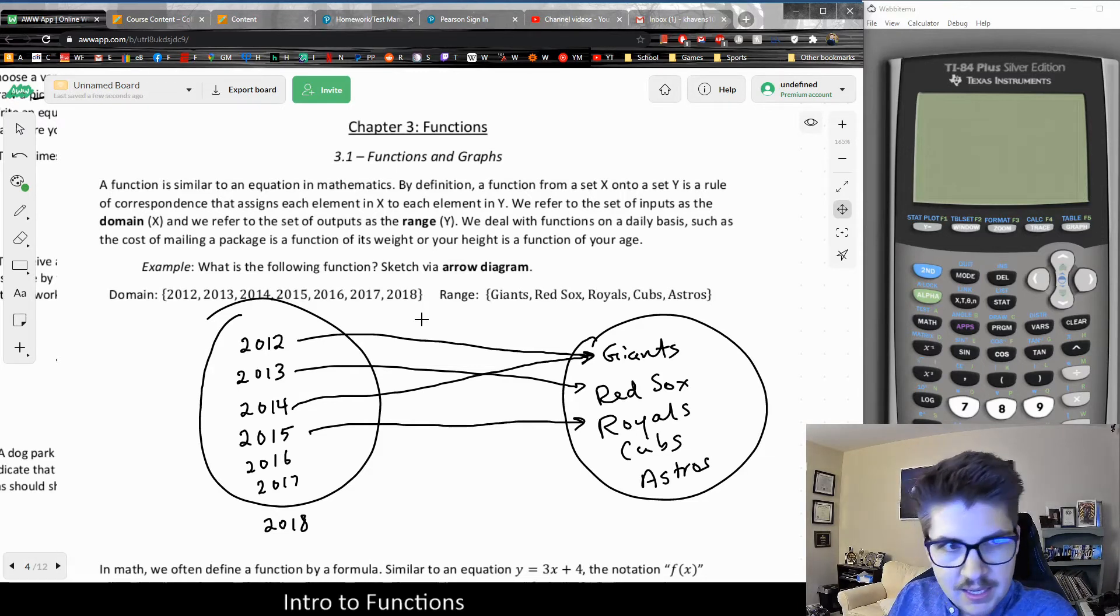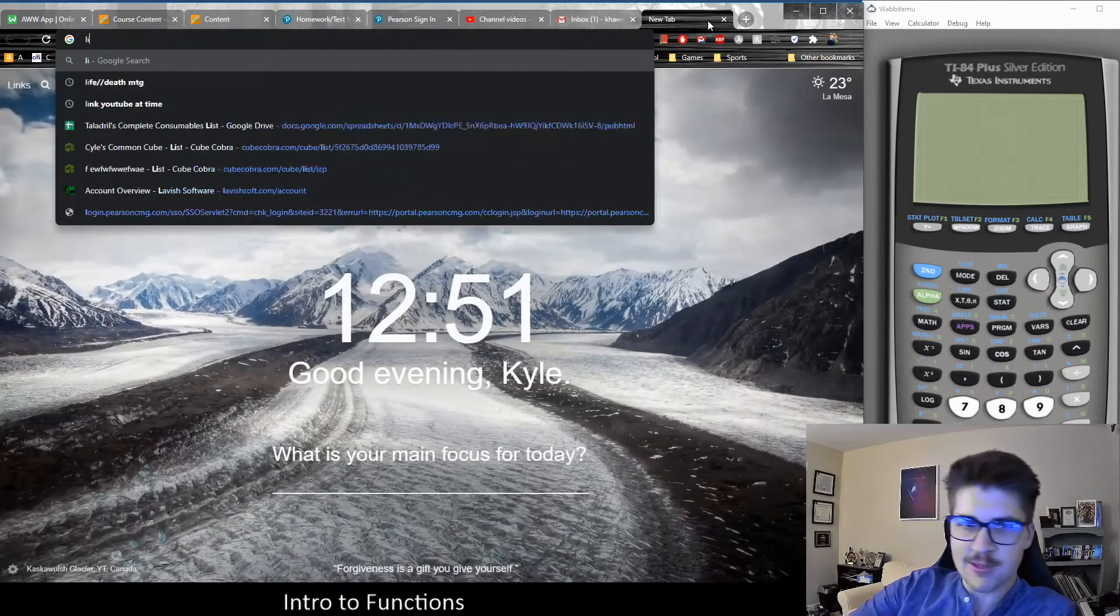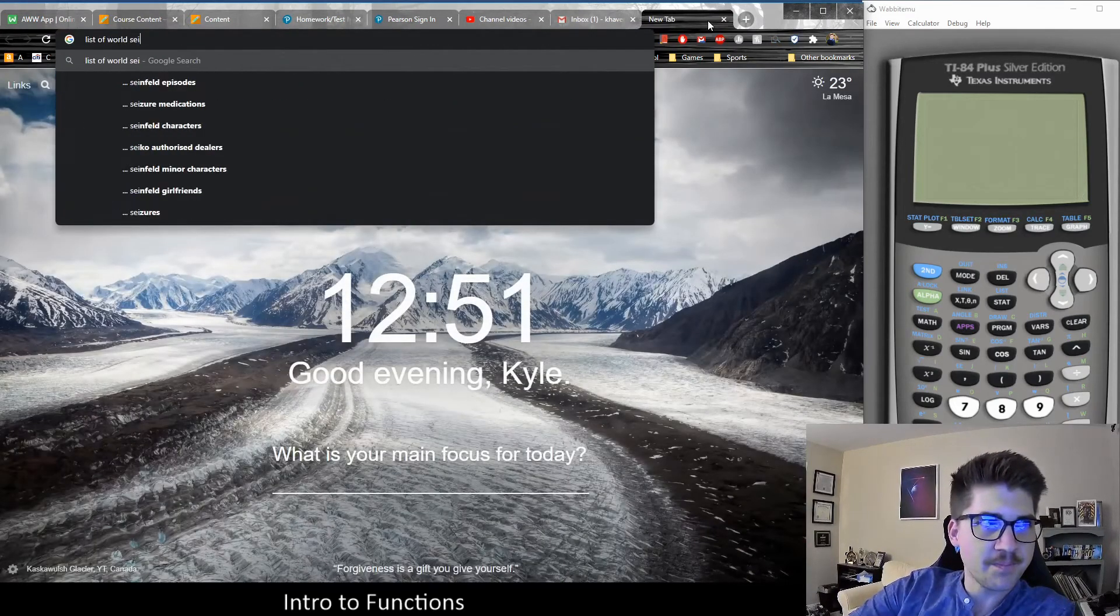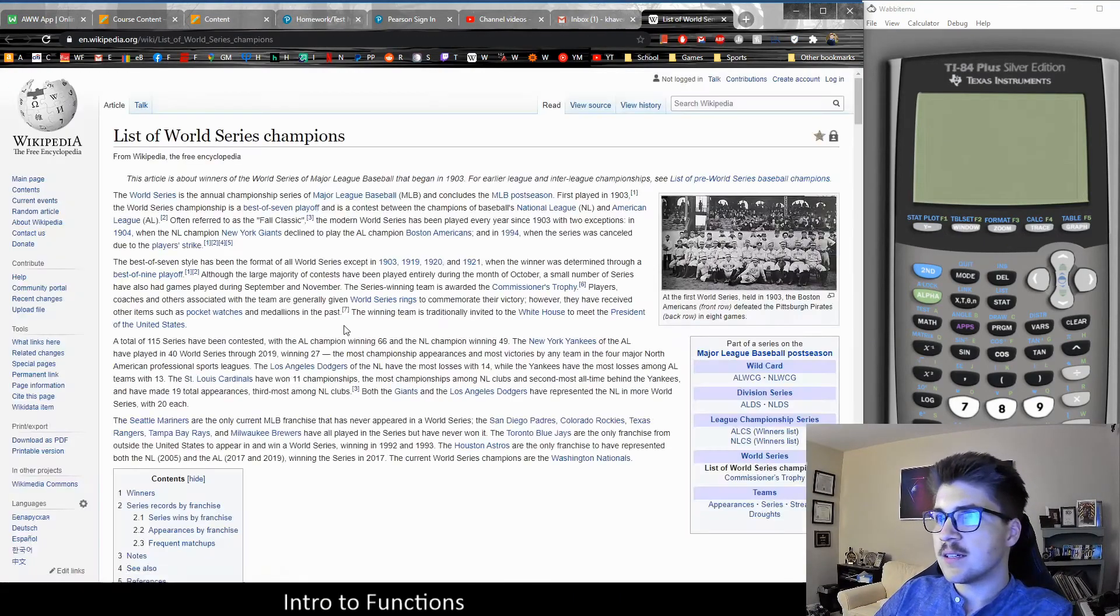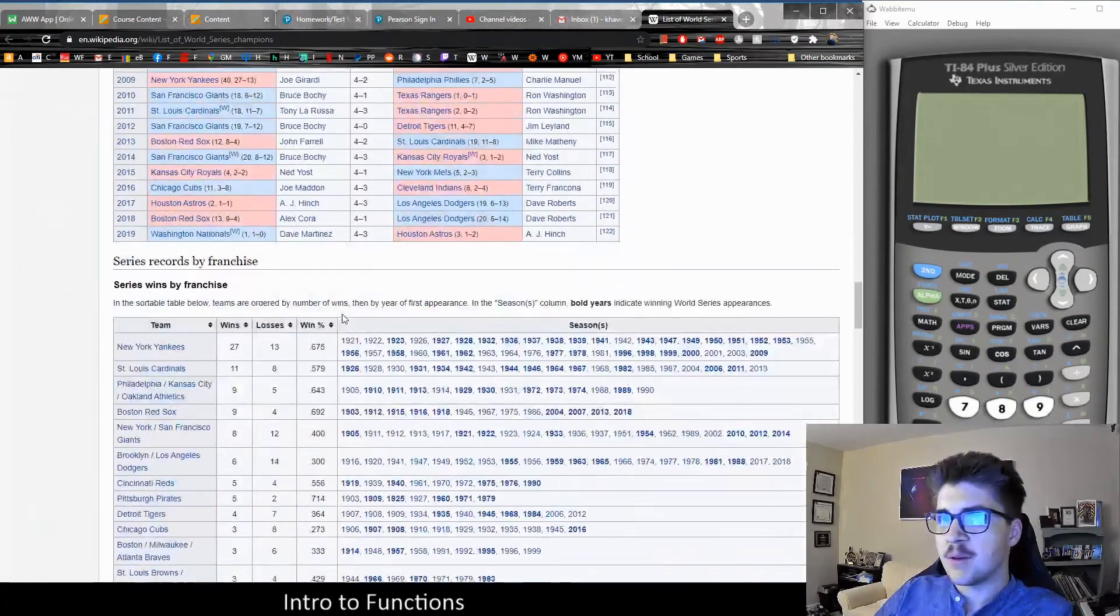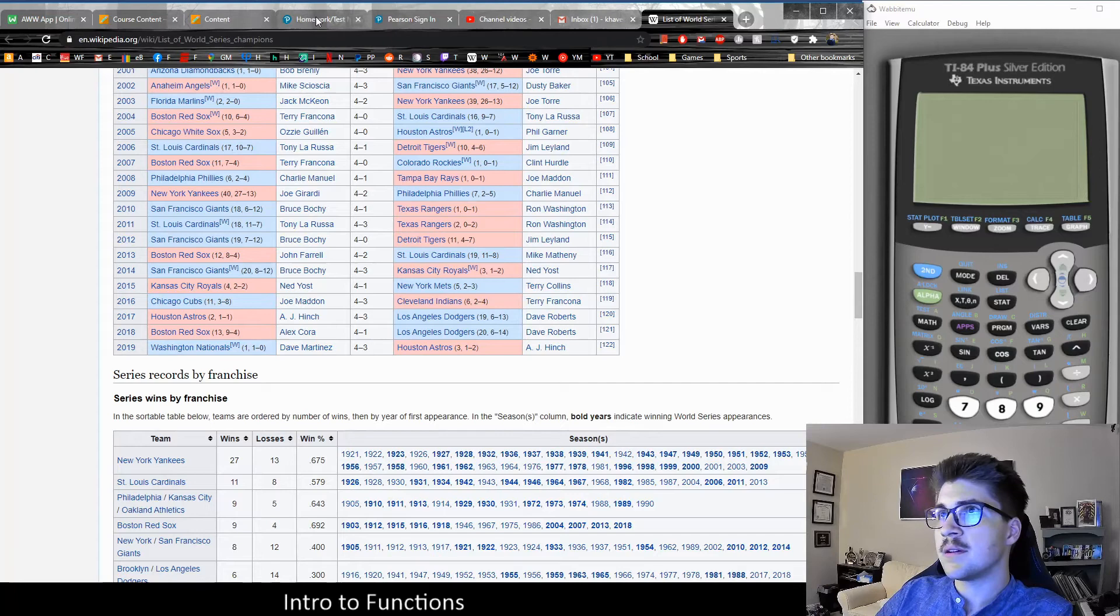Or was that the year the Cubs won? I could always go double-check this relation, but there was something about the best-of-world series winner. Let's see what we could come up with. It was the Cubs in 2016, the Astros in 2017, and the Red Sox in 2018.